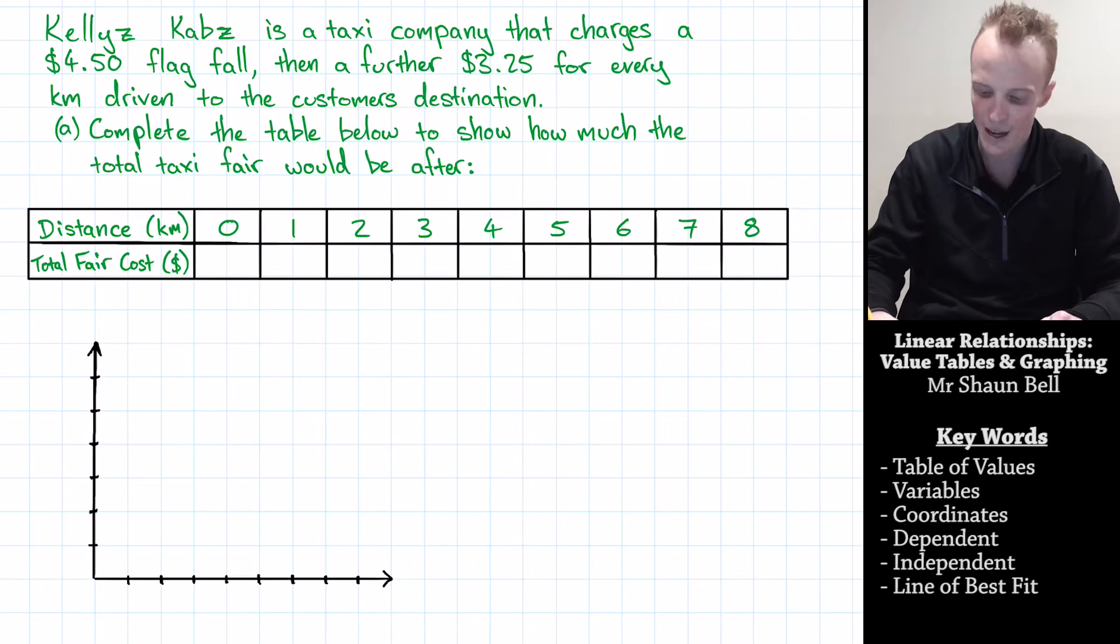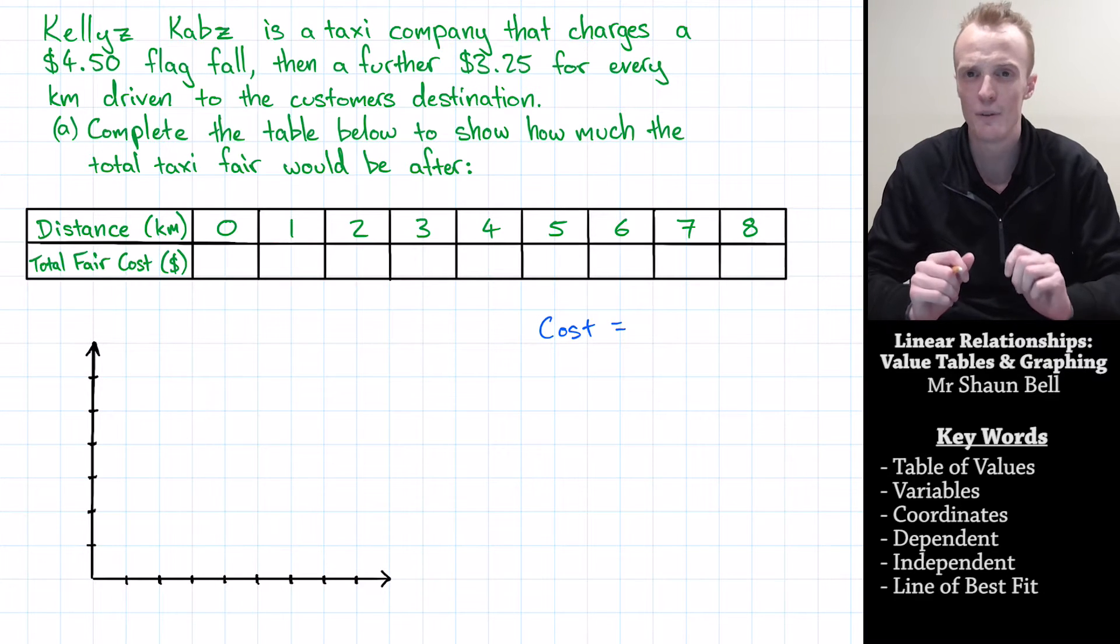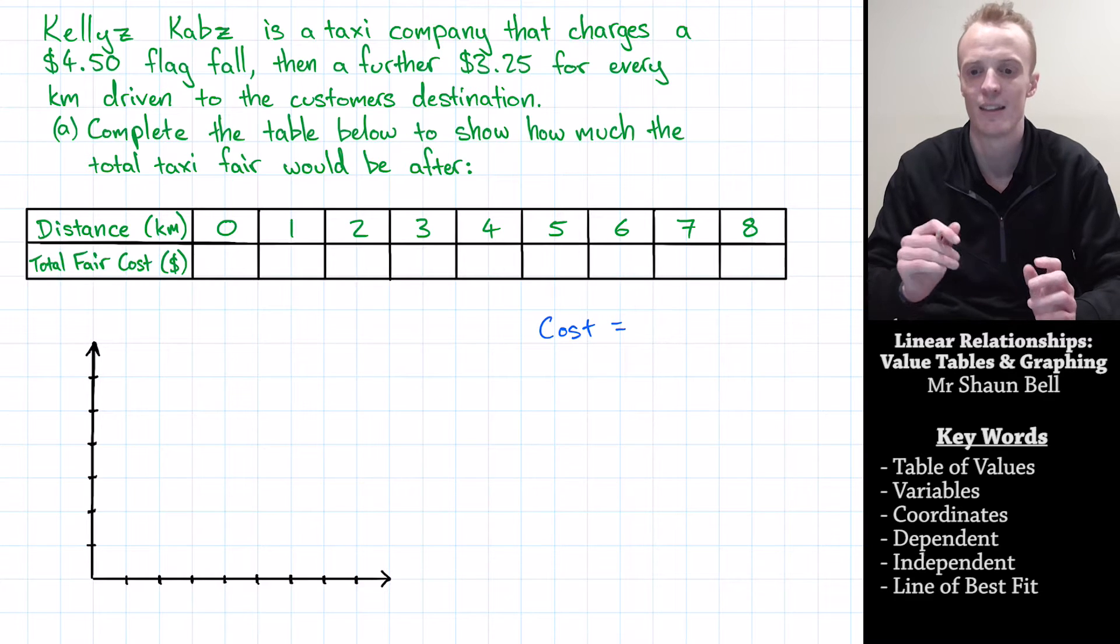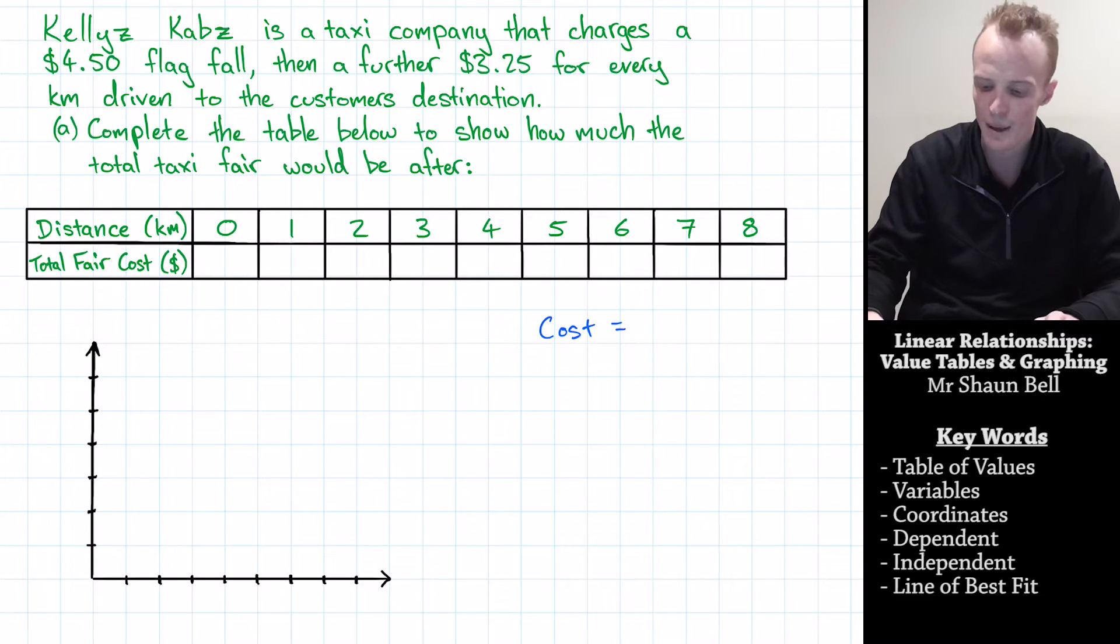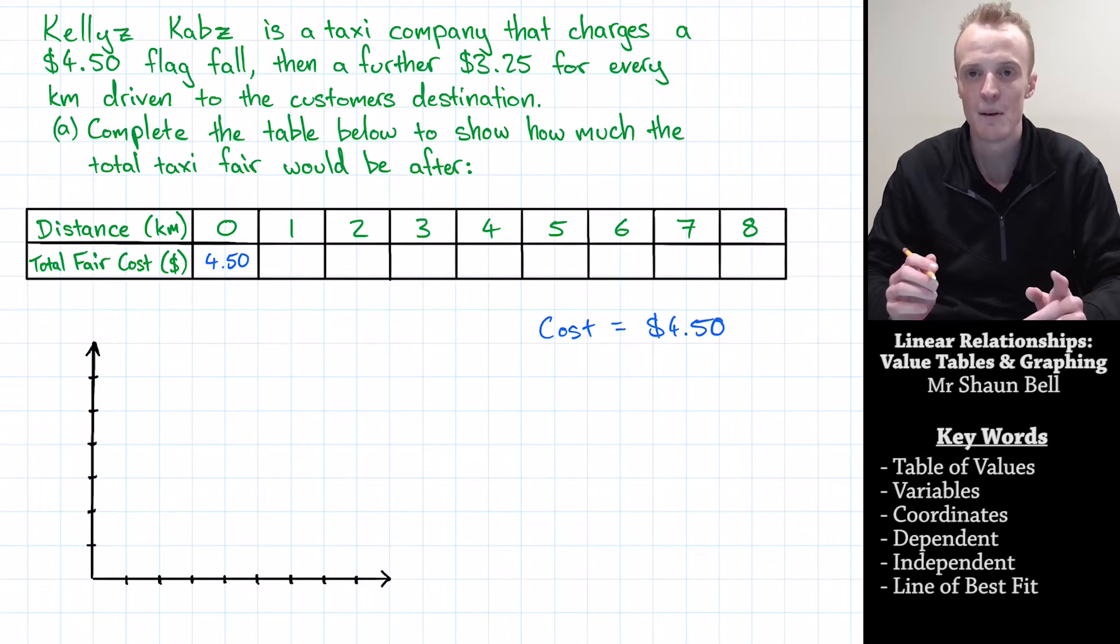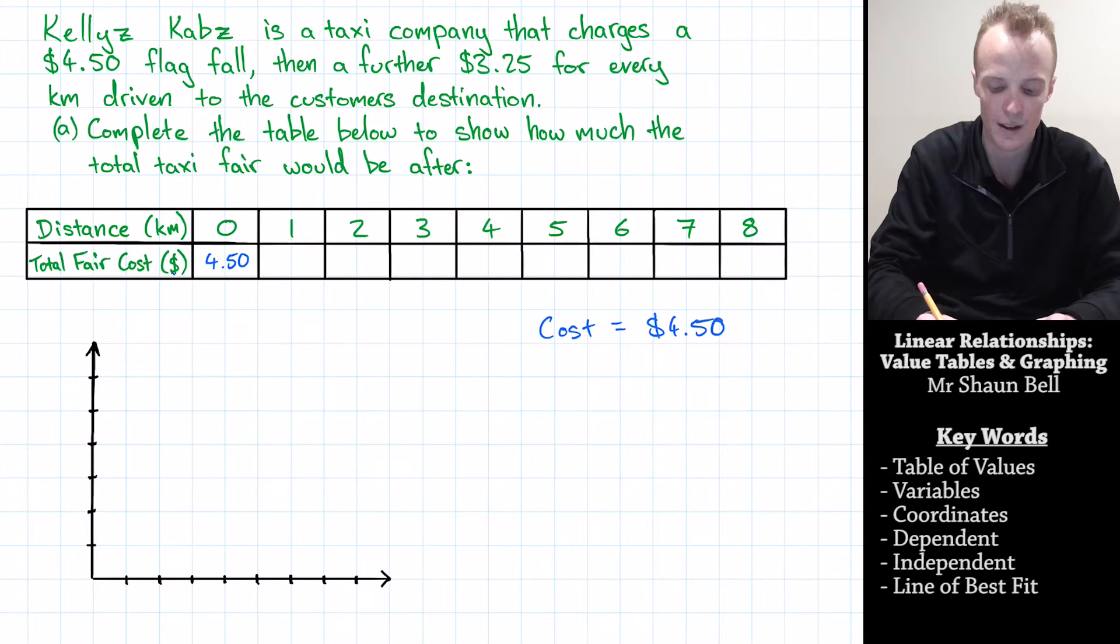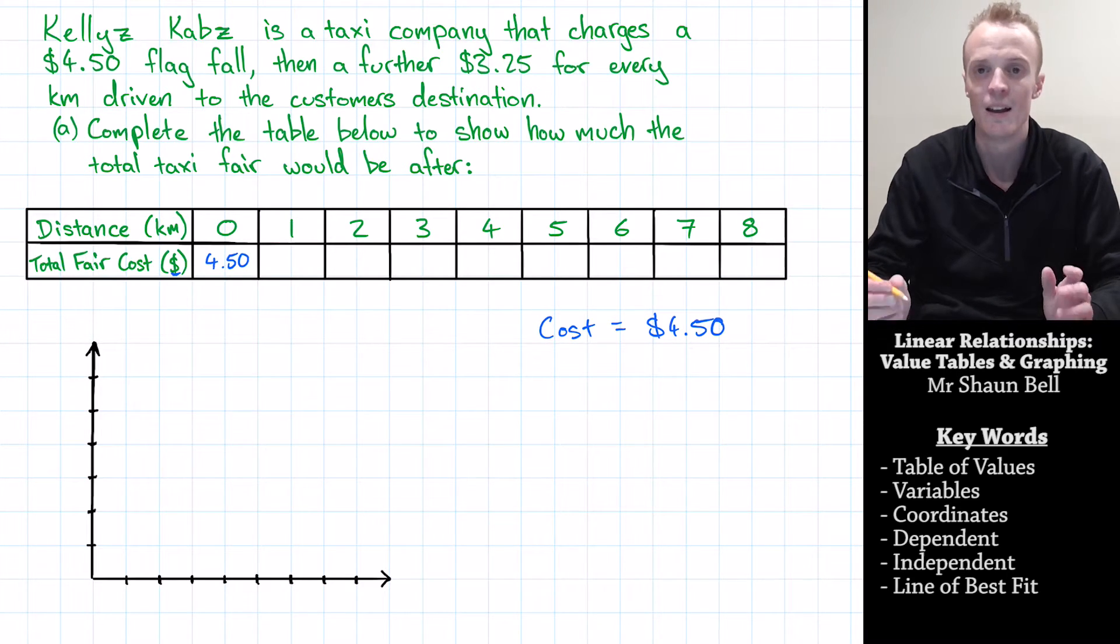So let's start by working out the cost for zero kilometres. Now for zero kilometres, we're only going to get charged the flag fall. The flag fall being that charge we get for getting inside the cab. So we're going to pay the flag fall of $4.50, which we can immediately put in our table of values right here under the zero kilometres. Now you might have noticed I didn't include the units, but the units is already on the left here inside our label.